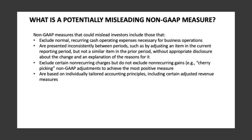Section 8: What is a potentially misleading non-GAAP measure? Non-GAAP measures that could mislead investors include those that: exclude normal, recurring cash operating expenses necessary for business operations; are presented inconsistently between periods, such as by adjusting an item in the current reporting period but not a similar item in the prior period, without appropriate disclosure about the change and an explanation of the reasons for it; exclude certain non-recurring charges but do not exclude non-recurring gains — for example, cherry-picking non-GAAP adjustments to achieve the most positive measure; and are based on individually tailored accounting principles, including certain adjusted revenue measures.